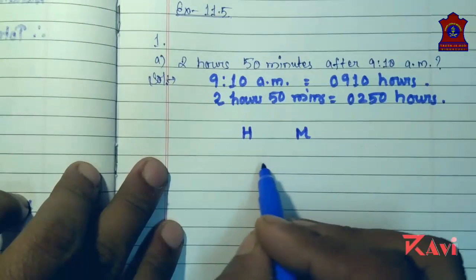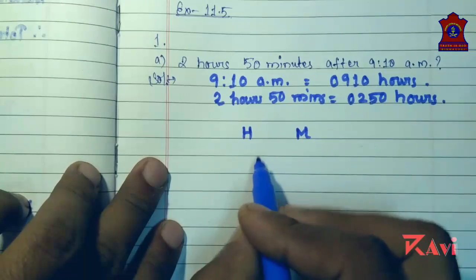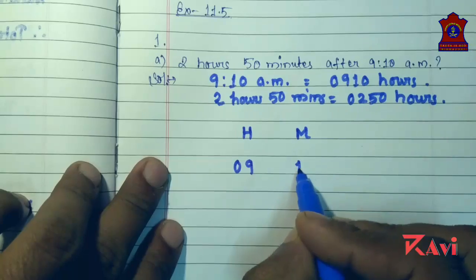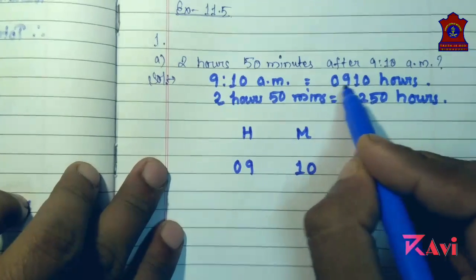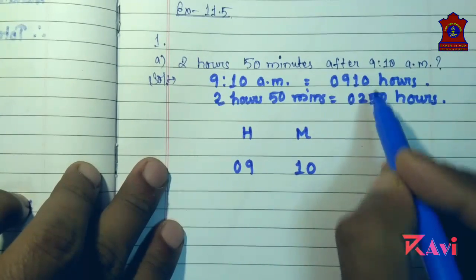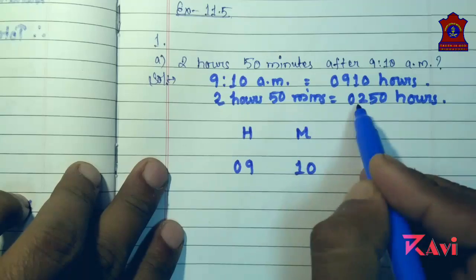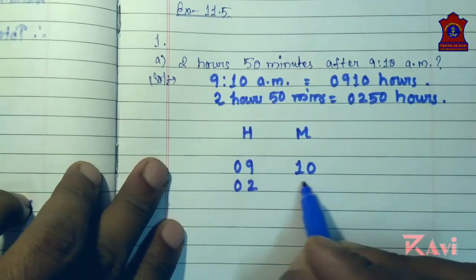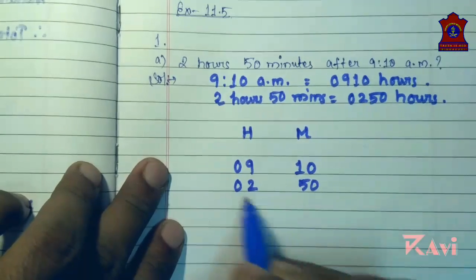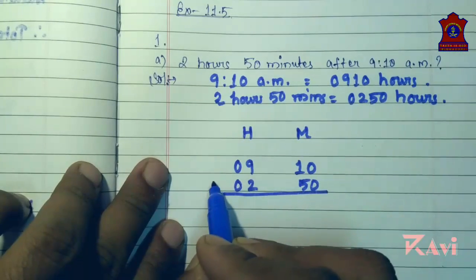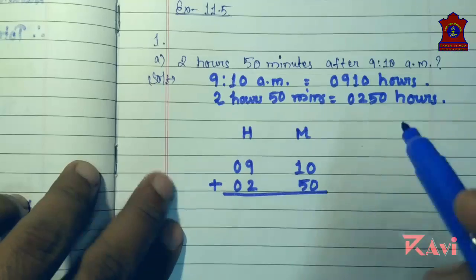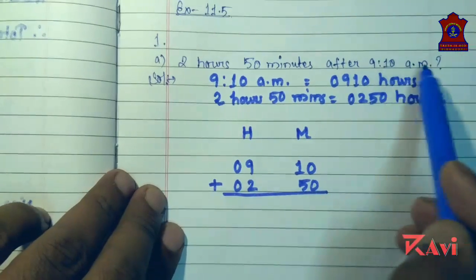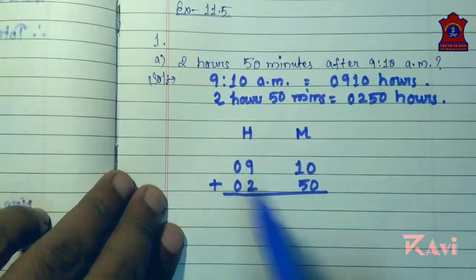Write 09 in the hours column and 10 in the minutes column — that is 0910. Now 2 hours 50 minutes will be 0250. We are finding time after 9:10 a.m., so add it.